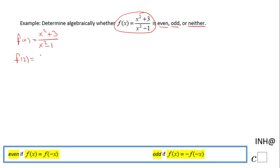I'm going to evaluate f(2) first, which means in this case 2² + 3 over 2² - 1. And I'm sorry, this is plus 3, not plus 4. That will be 4 + 3, which is 7, and in the denominator 4 - 1, which is 3.